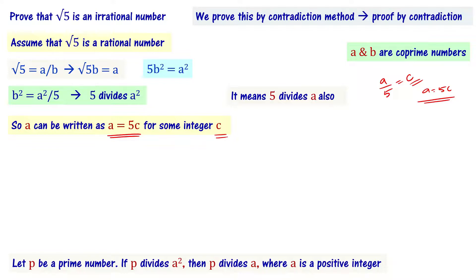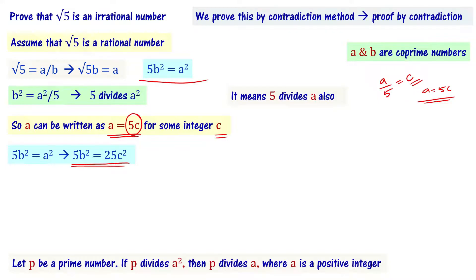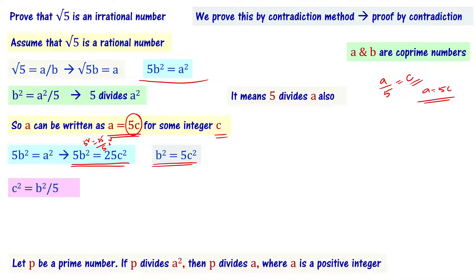Now a equals 5c. We substitute into 5b square equals a square: 5b square equals 25c square. So b square equals 25 by 5 times c square, which gives b square equals 5c square. I can write this as c square equals b square by 5.